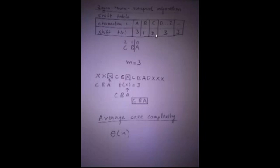For C we have the entry 2 because C occurs at the second position. And the rest of the characters and the space character never occur in the pattern, so all of them are equal to 3.